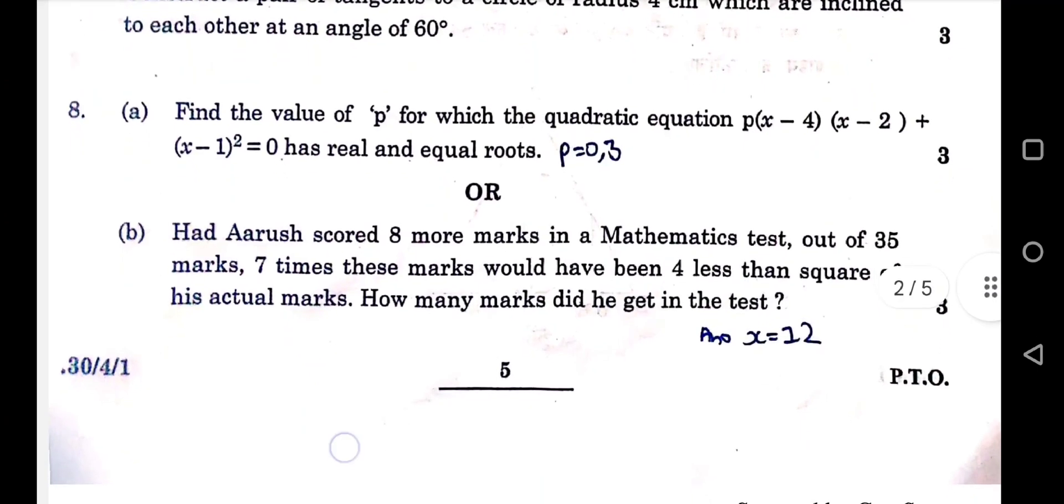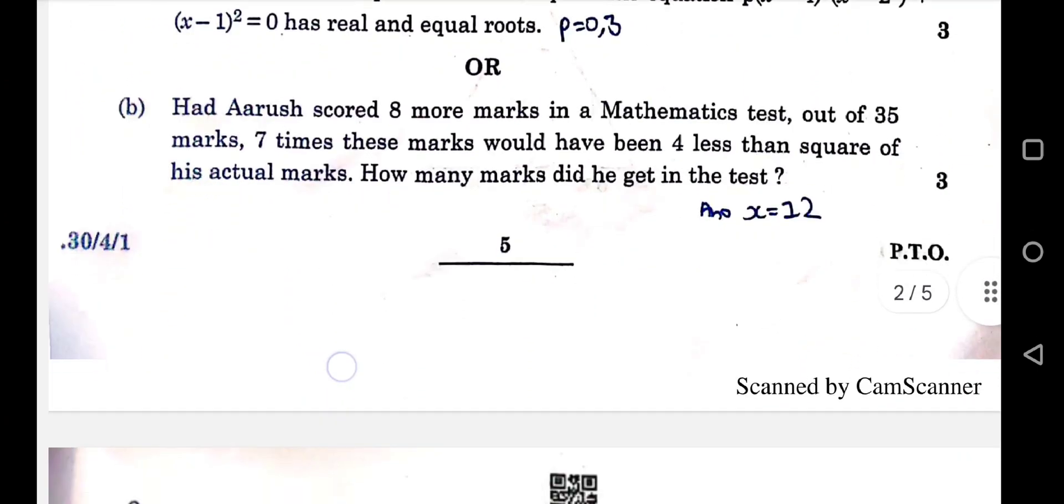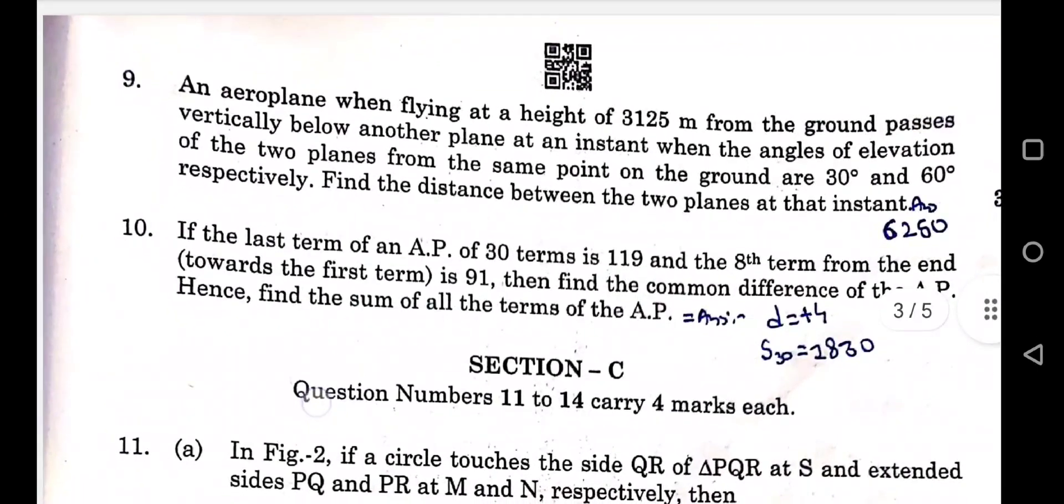Comma 3. Question 8b answer is 12. Question 9 answer is 6250. Question 10 common difference is 4 and...